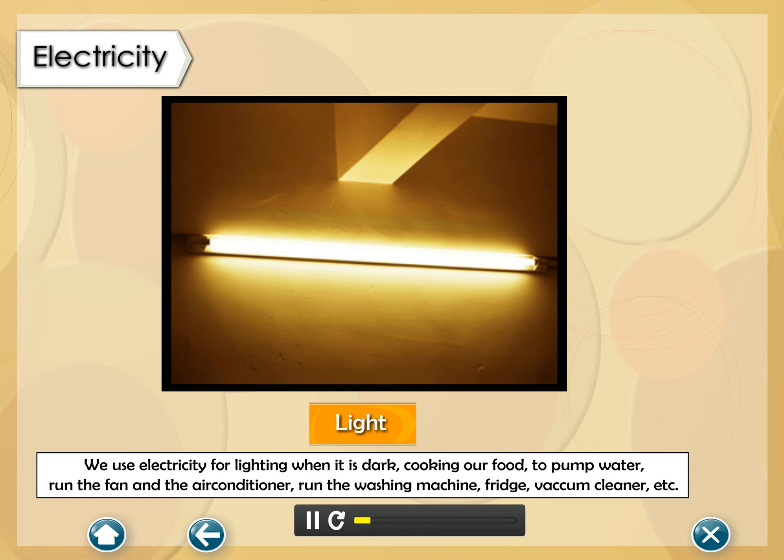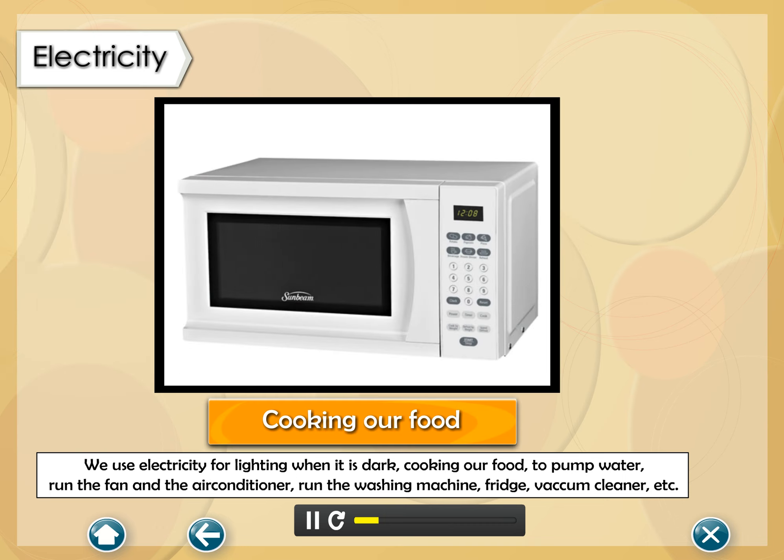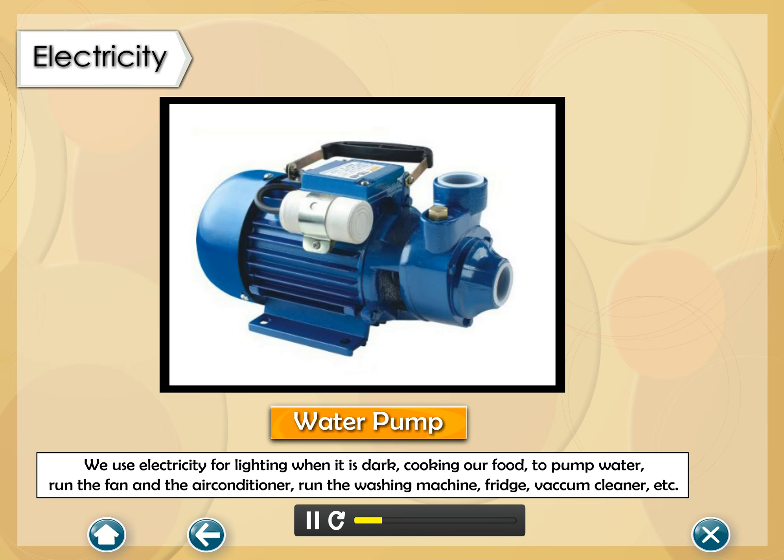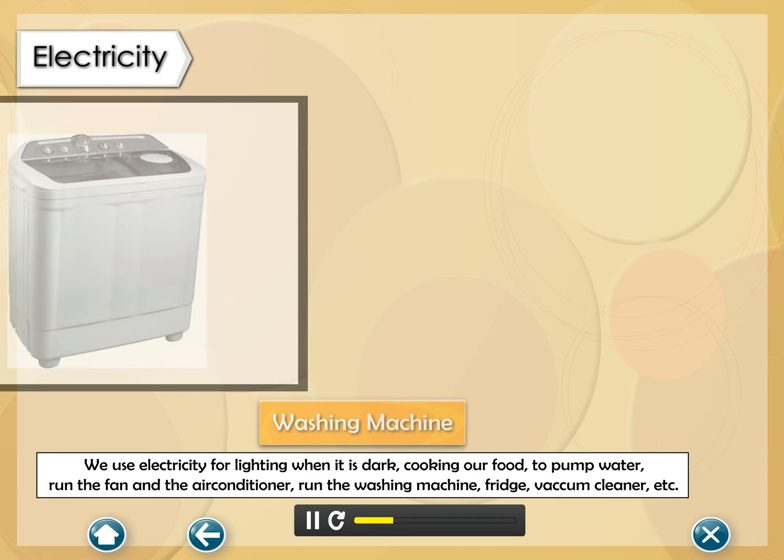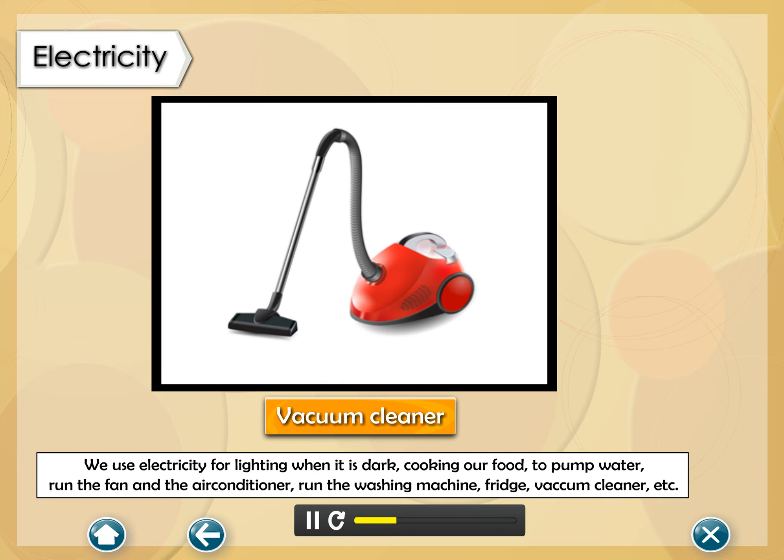We use electricity for lighting when it is dark, cooking our food, to pump water, run the fan and the air conditioner, run the washing machine, fridge, vacuum cleaner, etc.